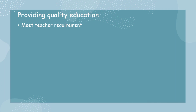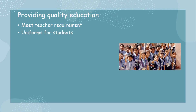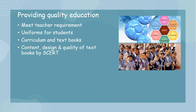Interventions under providing quality education: first, to meet teacher requirements in schools — where trained teachers are not available, additional teachers can be employed. To provide uniforms for students, because uniforms play an important role in maintaining a sense of equality. Curriculum and textbooks are prescribed by the state; content, design, and quality of textbooks are decided by the State Council of Educational Research and Training. Learning enhancement programs support and initiate reforms in the curriculum, including development of syllabus, textbooks, and supplementary reading materials.